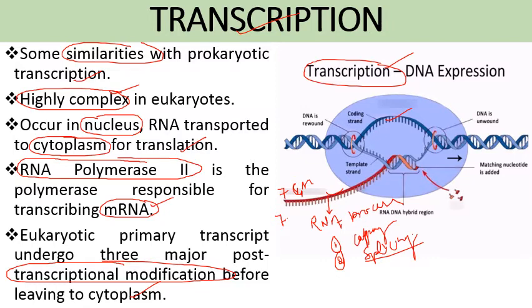The third step in RNA processing is tailing, which involves the addition of a poly-A tail at the three-prime end of the RNA.